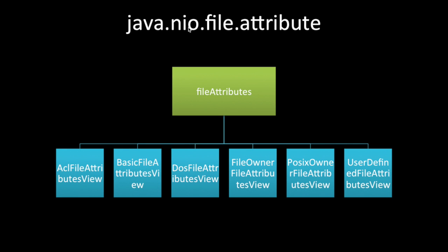The package java.nio.file.attribute deals with ACL file attribute views, basic file attribute views, DOS file attribute views, file owner attribute views, POSIX file attribute views, and user-defined attribute views. These APIs are defined under these file attribute classes — important APIs.